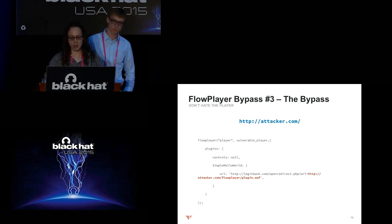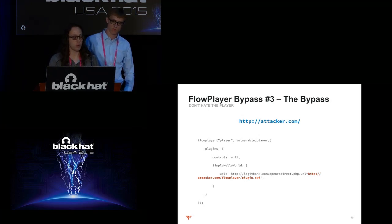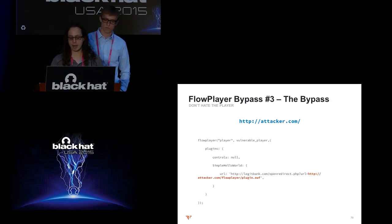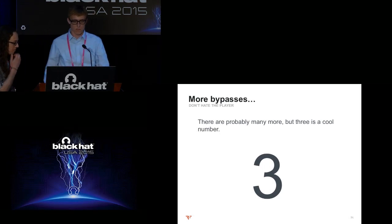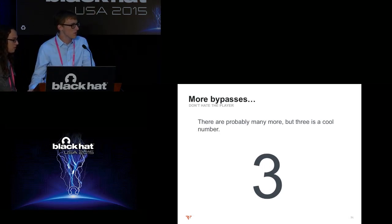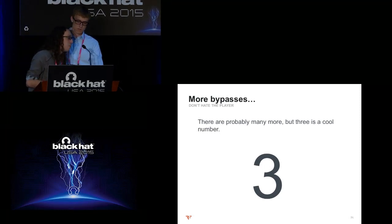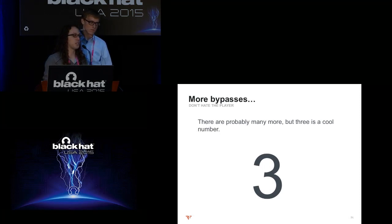A third bypass is more general-purpose: if there's an open redirect on your target, you can use it to fool the origin check and load your SWF from a remote host. Open redirects are typically a low-risk vulnerability, but here we're turning them into something high-risk — a full origin bypass. There are many more bypasses; you could probably find some yourself by going through the code. We talked to Flow Player about this issue, and they basically told us 'Flash is dead and we're not fixing these issues.' So if you ever see a FlowPlayer.swf on an engagement, it's always a vulnerability.